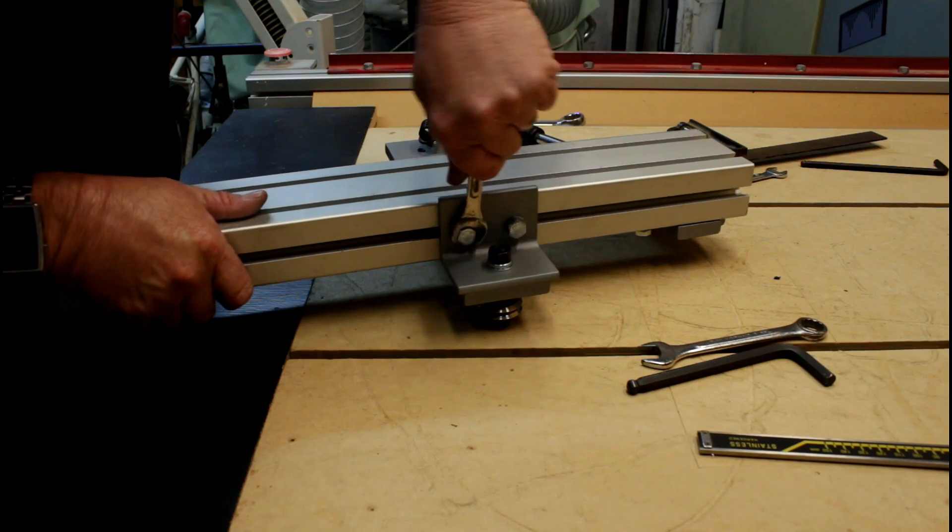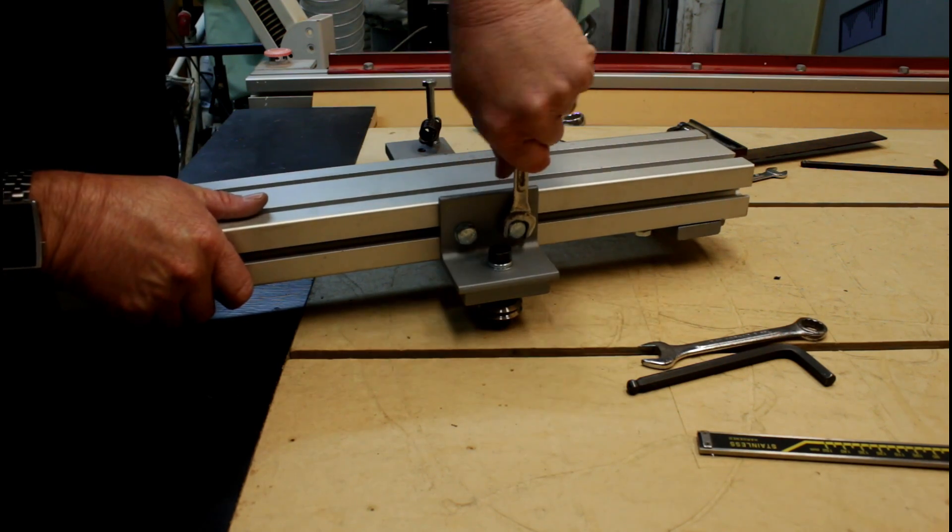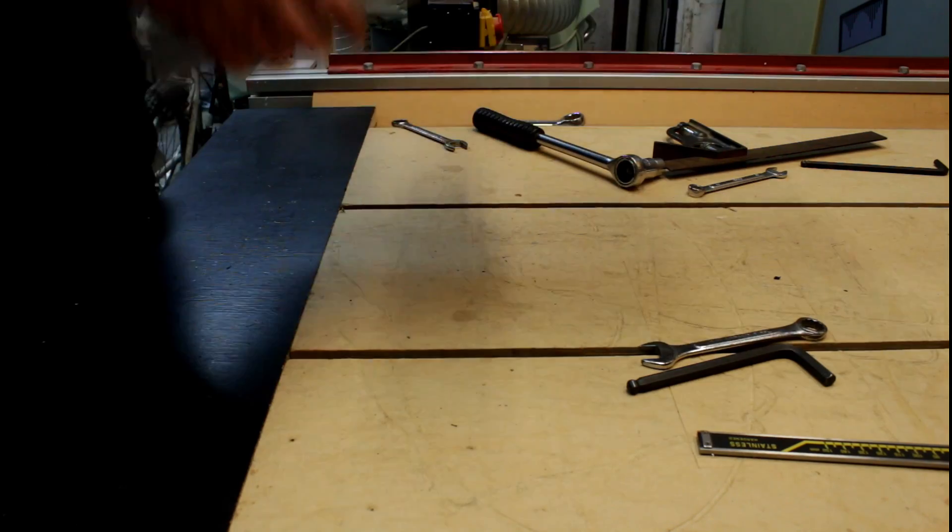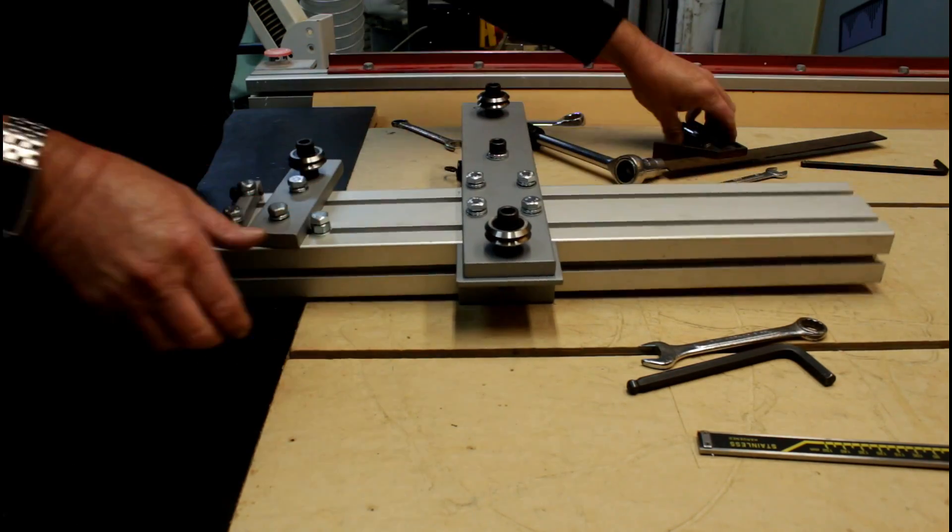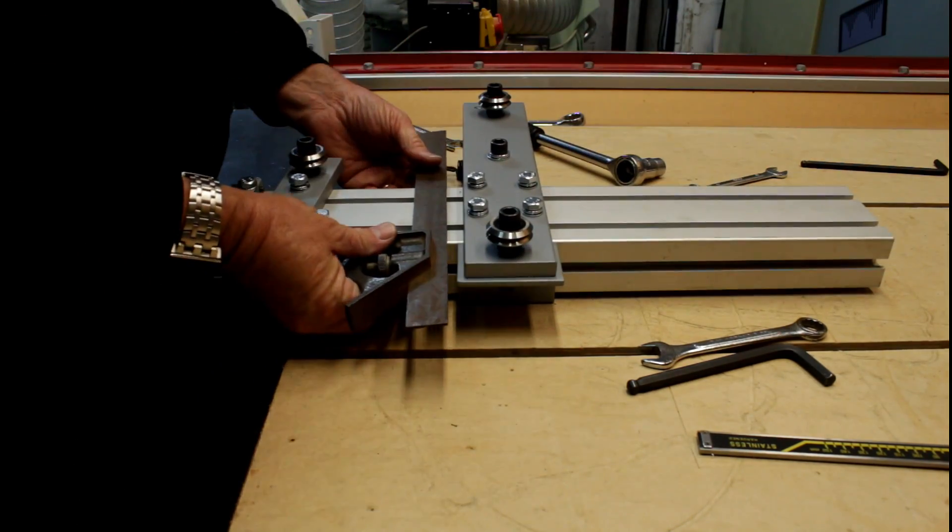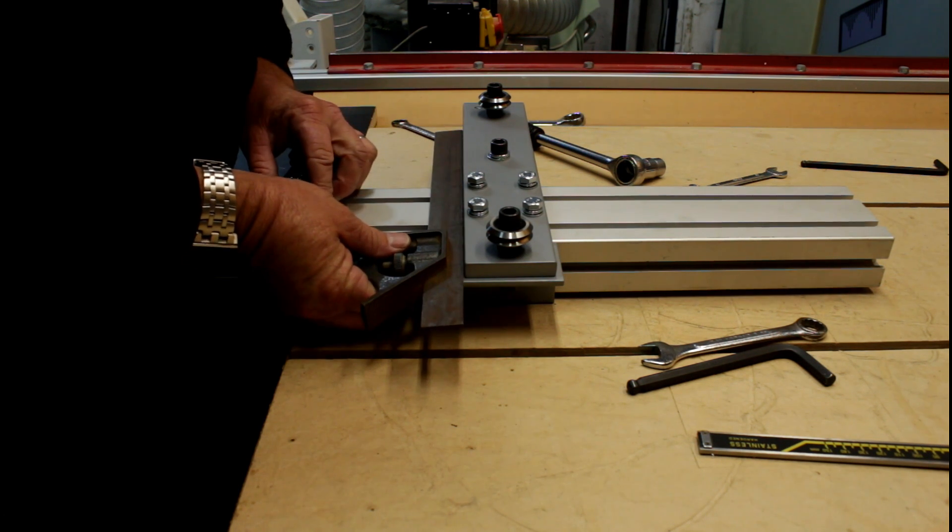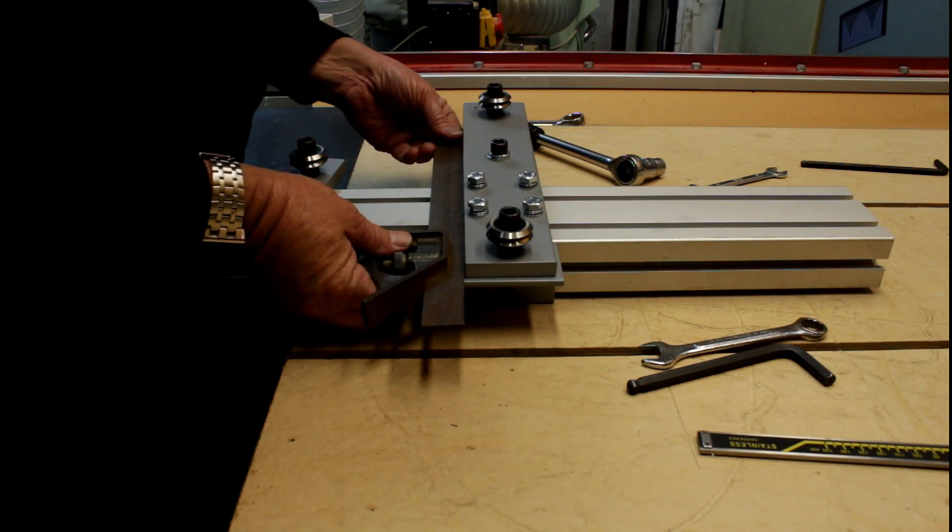Once everything is bolted together, I can now tighten up the bolts, both on the angle iron piece. Finally, after checking that the top rail plate is square, I can then tighten down the holding bolts. It is critical that this piece be set up square.